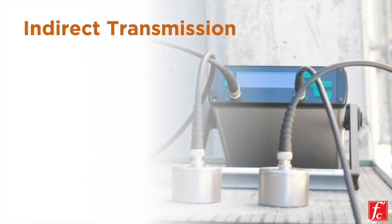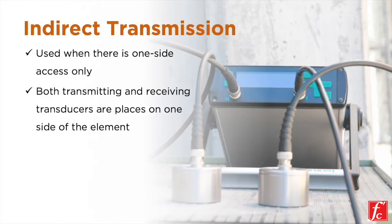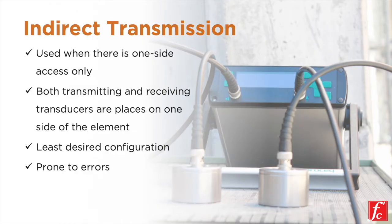When the concrete surface you are testing has one side access only, then an indirect or surface configuration can be used. This means that both transmitting and receiving transducers are placed on one side of the element. This is the least desired configuration and is also known to be prone to errors.